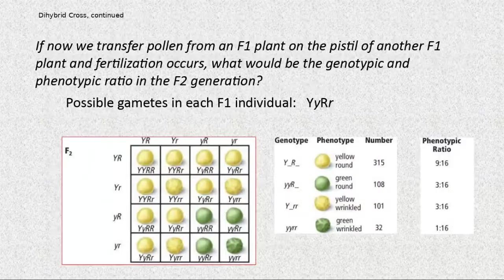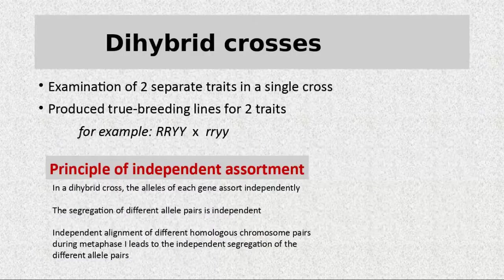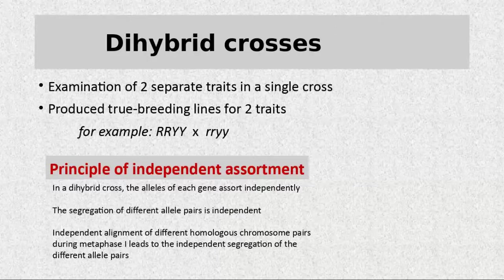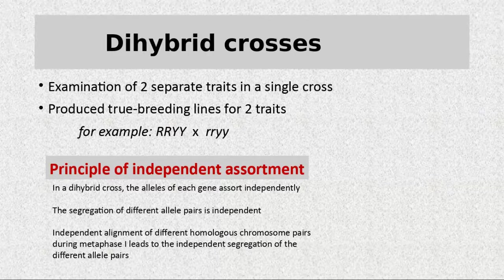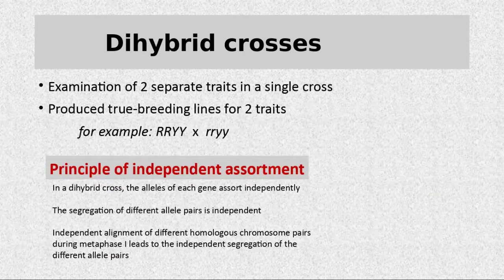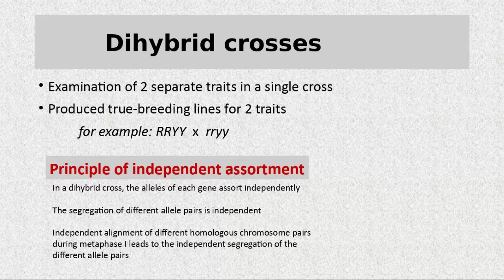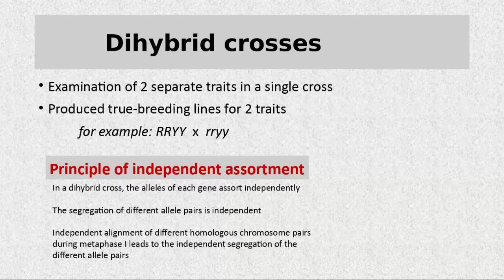We really don't know which chromosome homologue will go to which pole — it's truly independent. Remember, at the time of Mendel, DNA had not been discovered yet. We didn't even know about meiosis. He called inherited units 'factors' — he said the next generation inherits certain factors from the parents. DNA was described much later; we cloned DNA in 1956. Mendel came up with the dihybrid cross and the principle of independent assortment back in the 1800s.